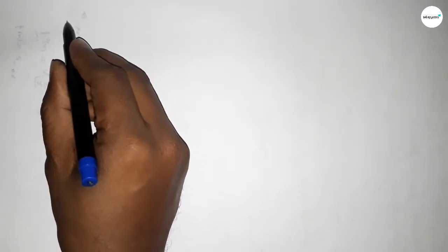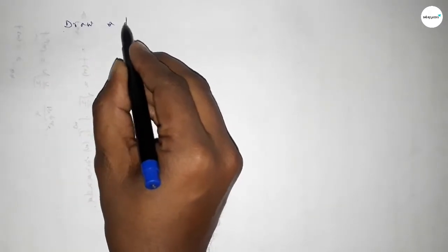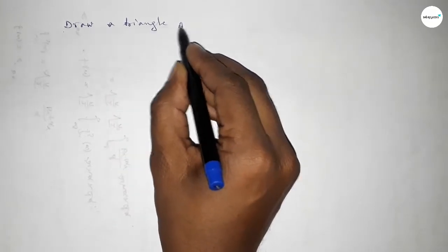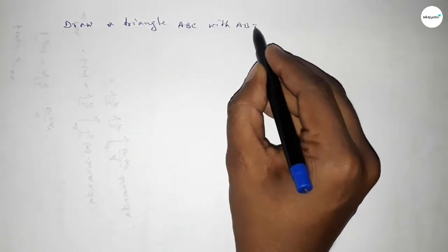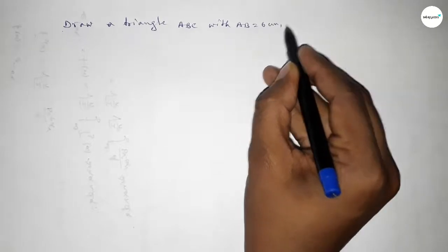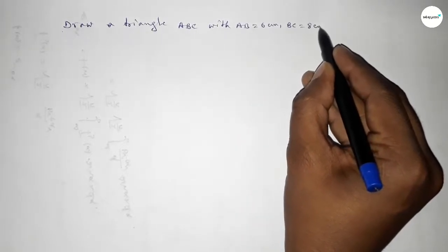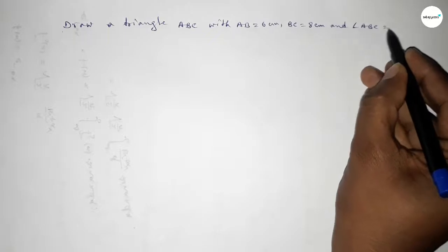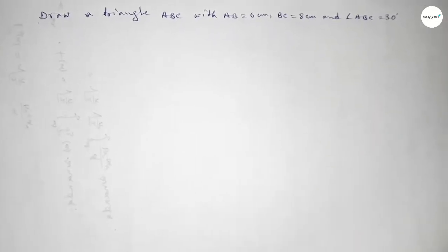Hi everyone, welcome to SI Share Classes. Today in this video we have to draw a triangle ABC with AB equal to 6 centimeters, BC equal to 8 centimeters, and angle ABC equal to 30 degrees. Let's start the video.